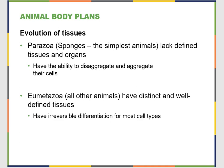Porifera — the sponges — don't have defined tissues and organs. They have the ability to disaggregate and aggregate their cells. If you put a sponge in a blender, make a sponge smoothie, and pour it back into healthy salt water, it will aggregate itself back into a sponge. All other animals have really distinct and well-defined tissues, and once a stem cell has become a bone cell or a nerve cell, it can't go backwards — its life has been defined.